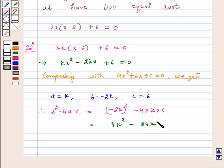Now, we know that for equal roots, the discriminant should be equal to 0.